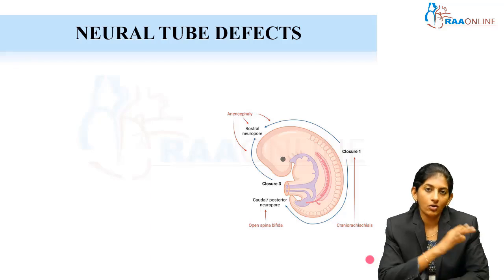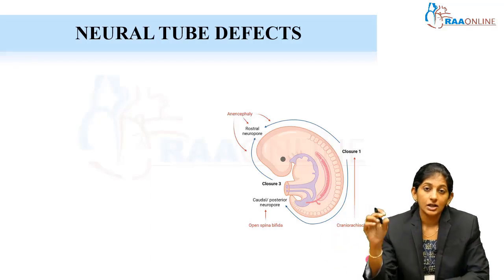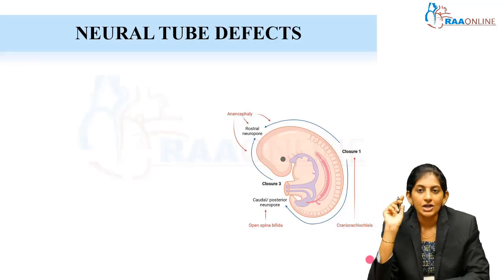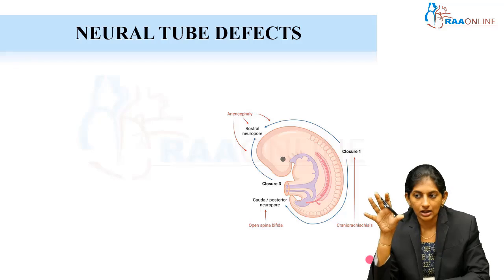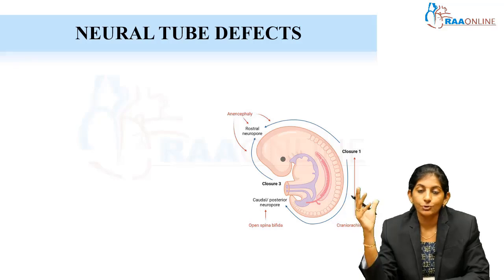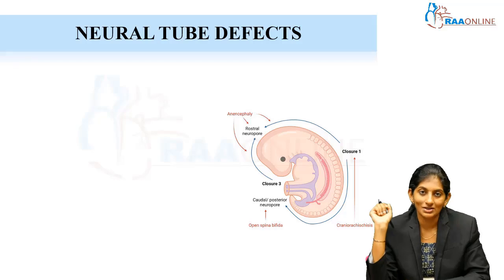We will discuss not all the anomalies but the most common ones, like the neural tube defects and the migration disorders. These are important clinically for counselling purposes, and you find these children as one among those intractable epilepsy groups.